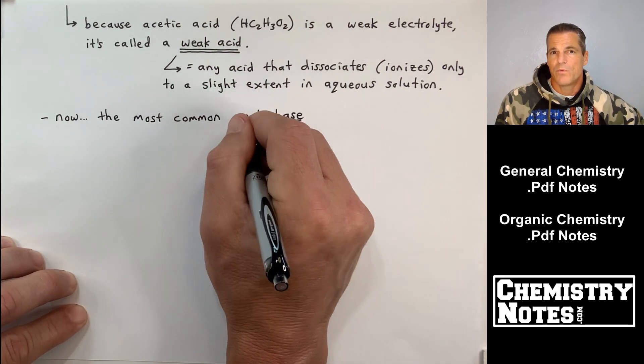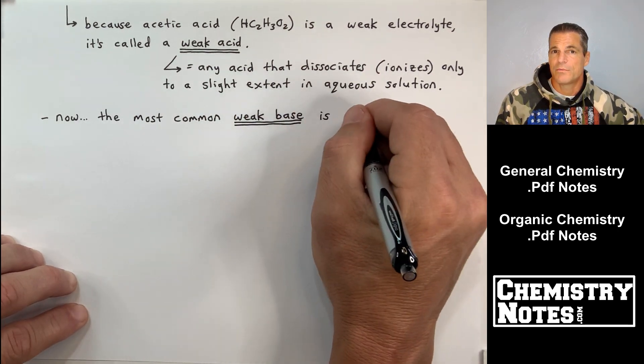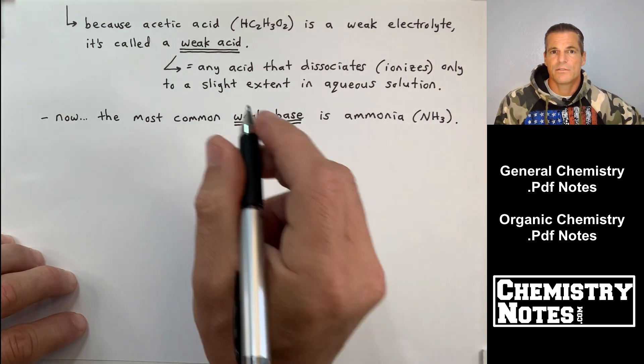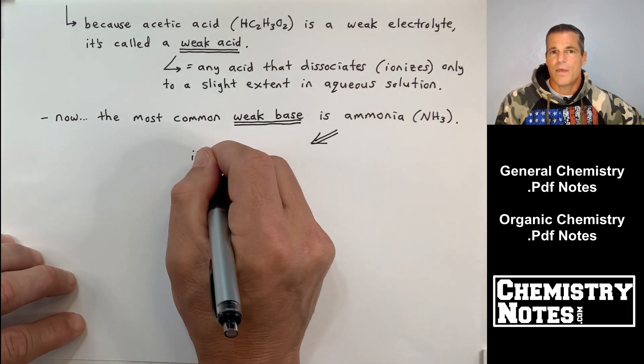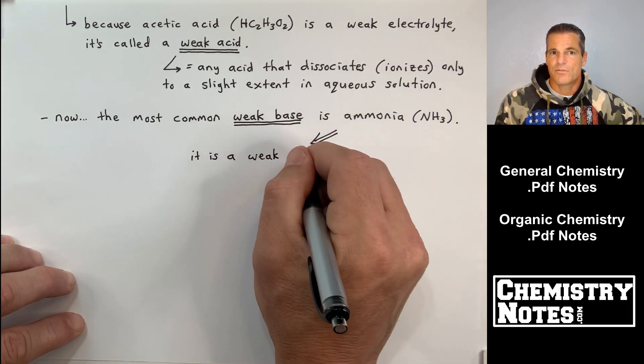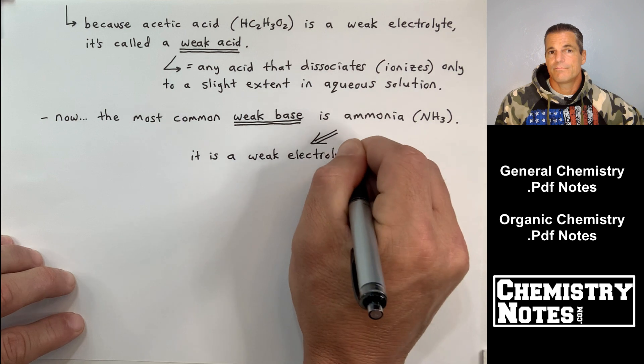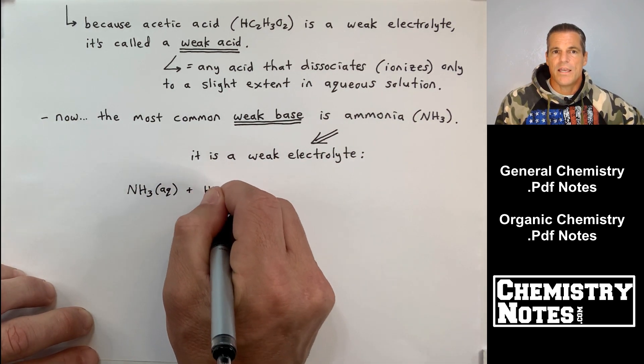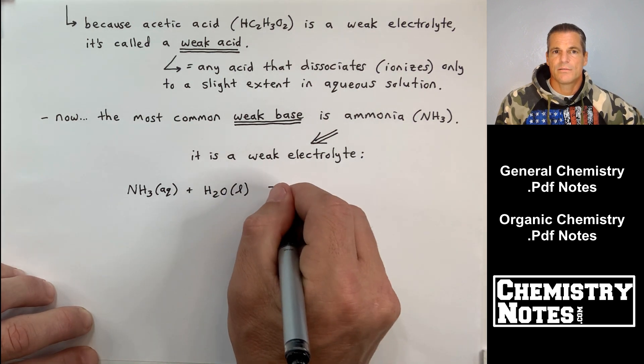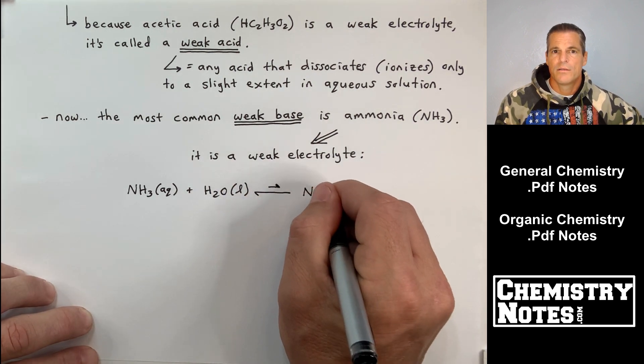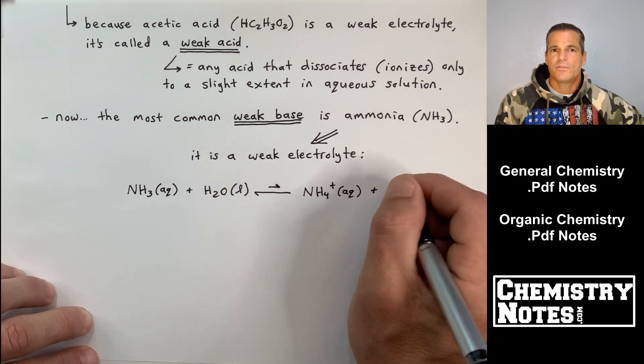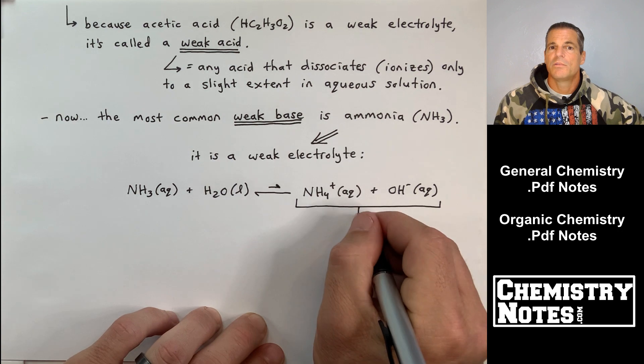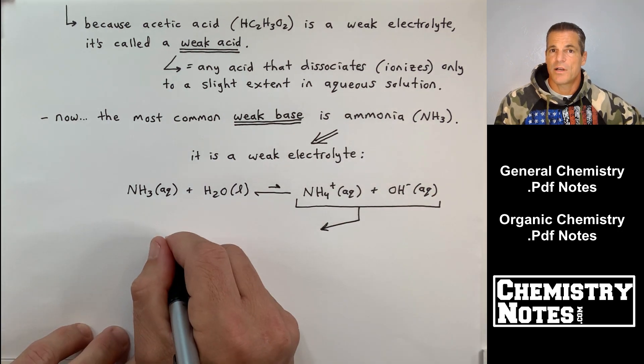So that's the most common weak acid that acts as a weak electrolyte. Now let's take a look at the most common weak base, which I mentioned earlier, was ammonia, NH3, midway through the last page of our notes. The most common weak base is ammonia, NH3. It says here if it's a weak base, it's a weak electrolyte. So NH3 aqueous plus H2O liquid is going to produce the NH4+ ion, ammonium ion, plus OH- ion, hydroxide ion.